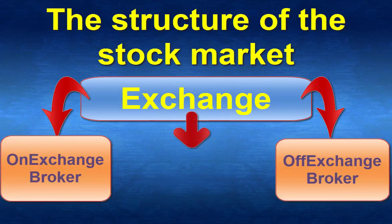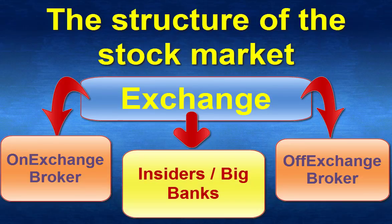The third group is composed of the big money, also named insiders, and the big banks. This group makes transactions with huge volume that permits them to process directly to the market.